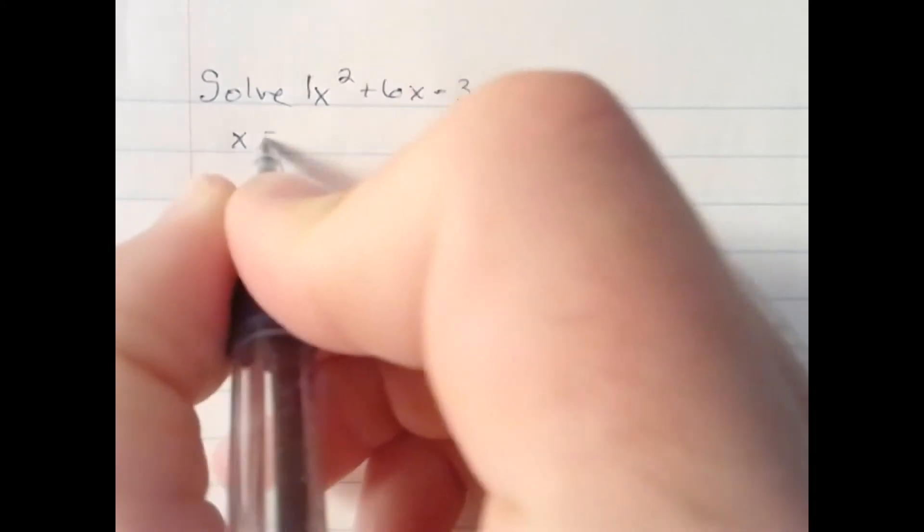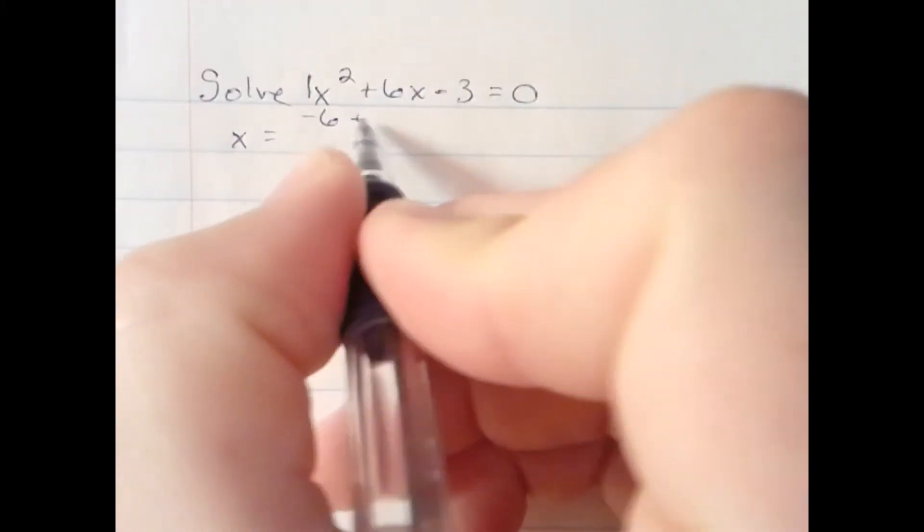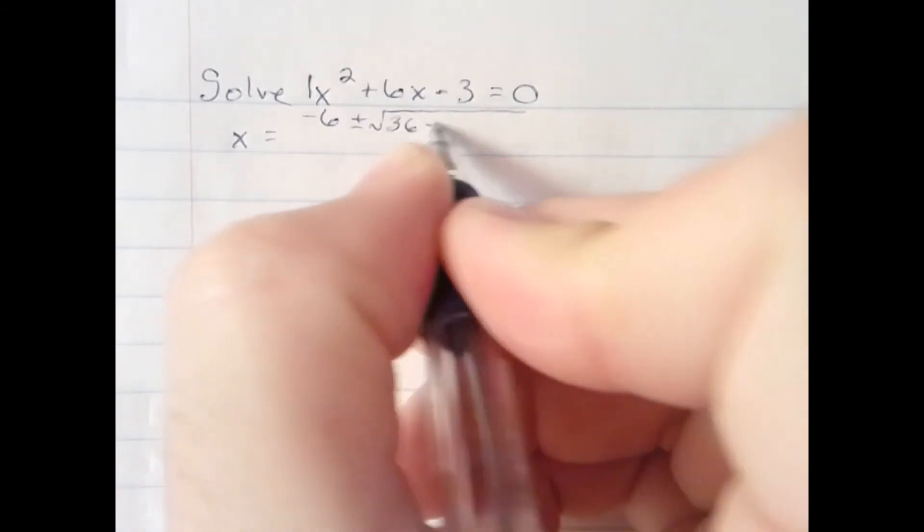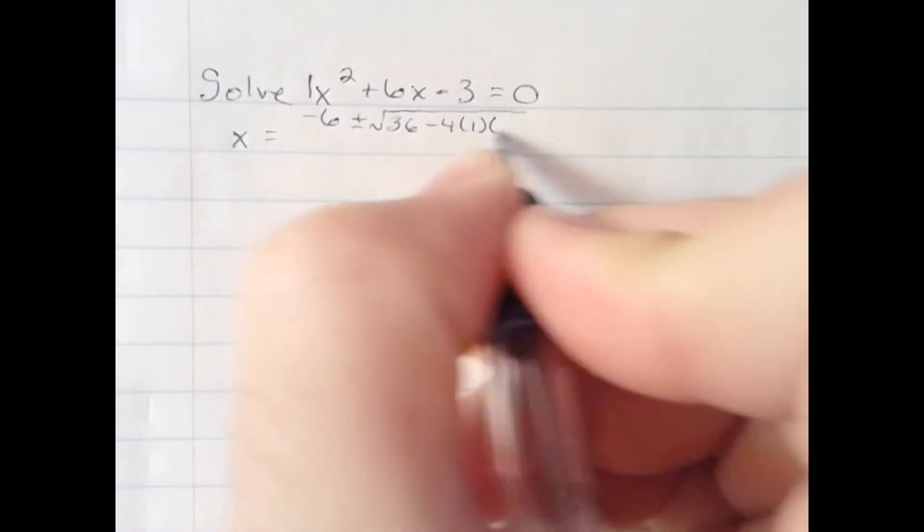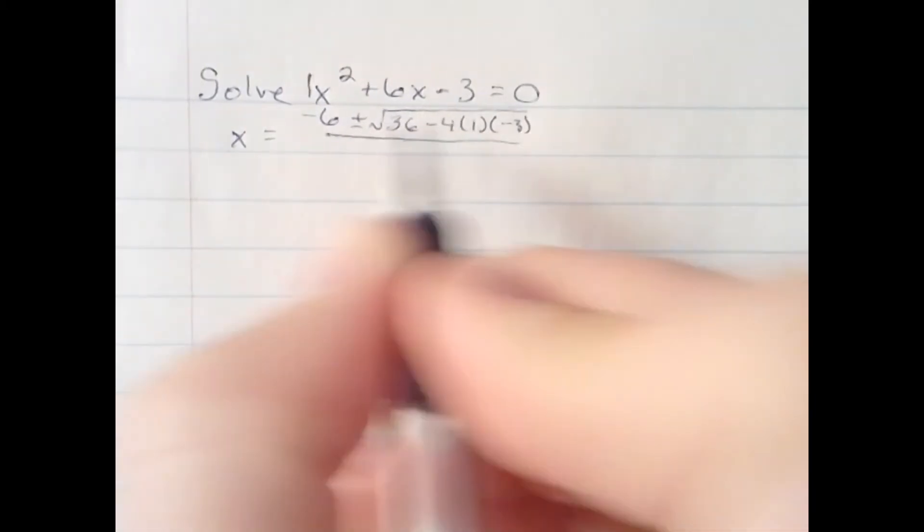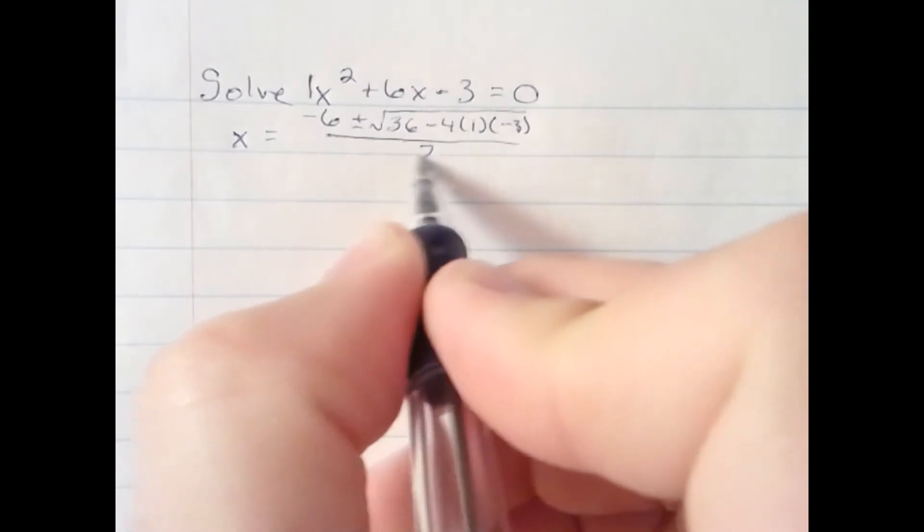The quadratic formula says take negative b plus or minus square root of b squared minus 4 times a times c. 2 times the a is the denominator, so 2 times 1 is 2.